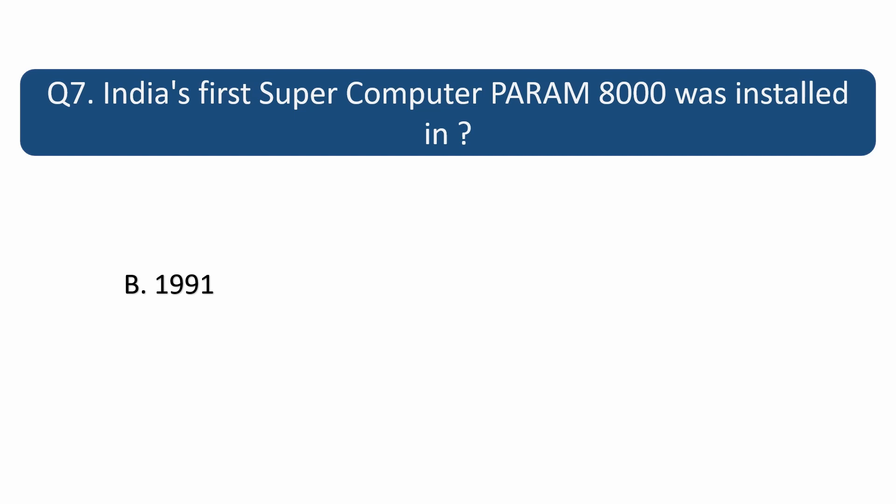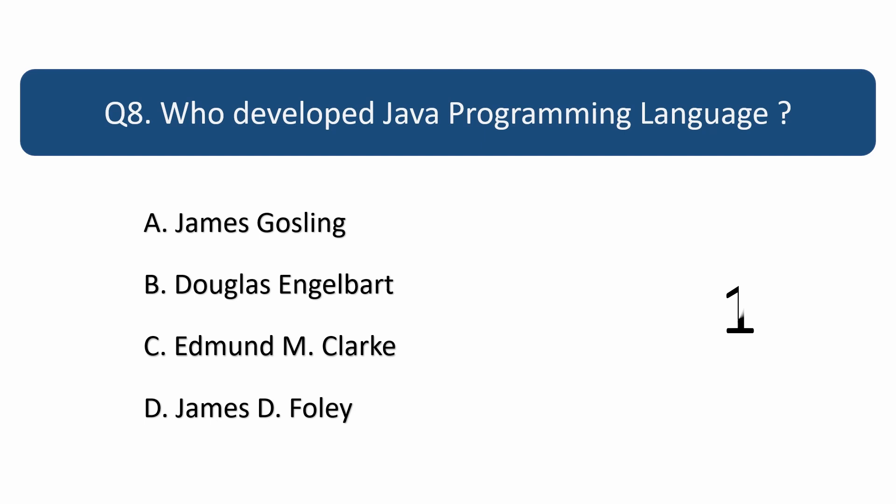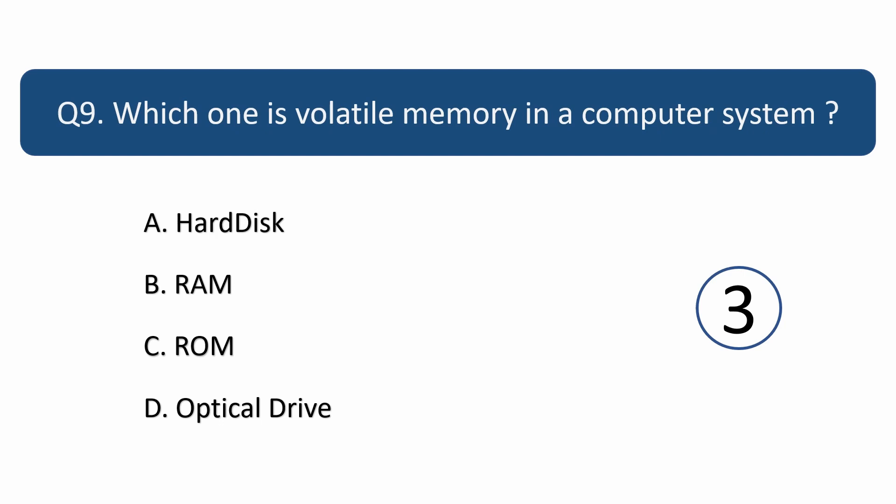Question number 8. Who developed Java programming language? Answer is A. James Gosling.